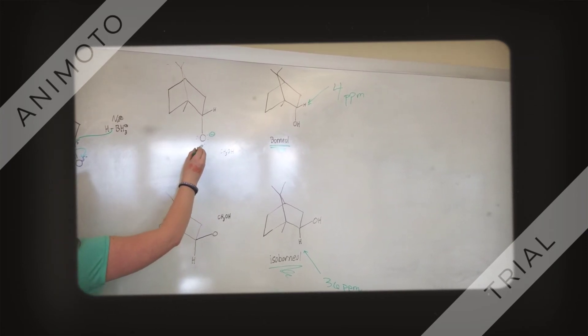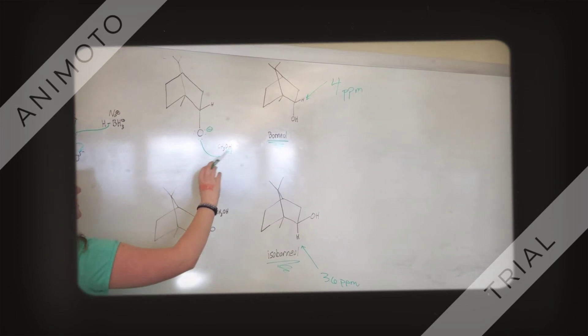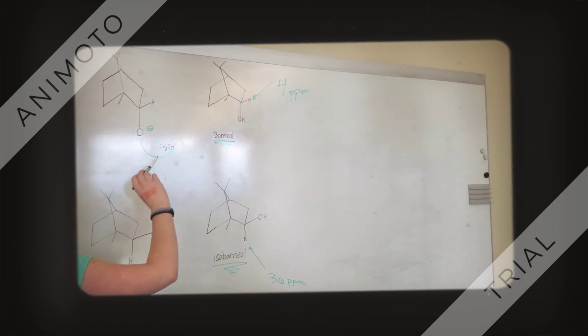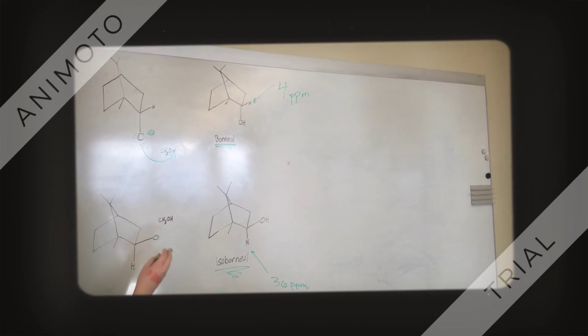Once we get here, one of these lone pairs will attack the hydrogen on methanol, which makes borneol, which has an NMR peak at 4 ppm for the hydrogen attached to that hydroxyl group carbon.